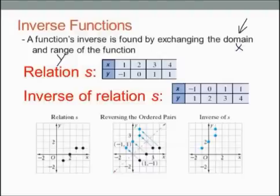And I have an XY table here. Now, in your calculator the XY table is vertical, up and down, but here it's horizontal. So I have points 1, negative 1; 2, 0; 3, 1; and 4, 1.